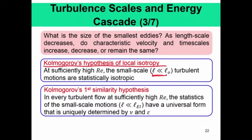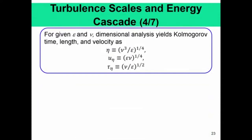Using this we can go to Kolmogorov's first similarity hypothesis, which states that in every turbulent flow at sufficiently high Reynolds number, the statistics of the small scale motion have a universal form, uniquely determined by the kinematic viscosity and the turbulent kinetic energy dissipation rate. This is very important: small scale motions are universal and determined only by kinetic energy dissipation rate and kinematic viscosity. The small scales of turbulence are the Kolmogorov length scales, the Kolmogorov velocity scales, and the Kolmogorov time scales.